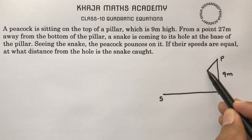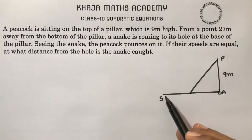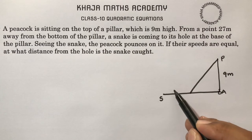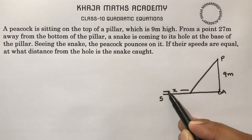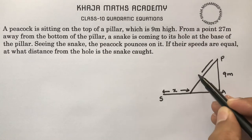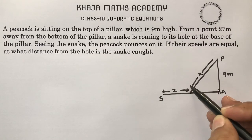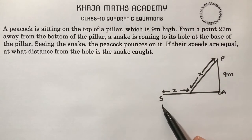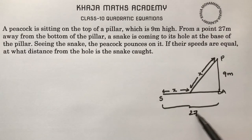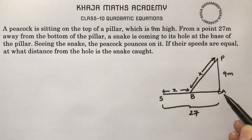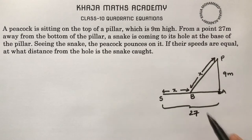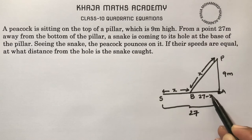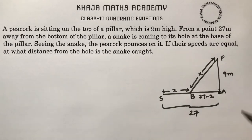The speeds of the snake and peacock are equal, so they will cover equal distance. This distance will be x, and this distance also will be x because they have equal speeds. The total distance from the point is 27 meters, so AB will be 27 minus x.